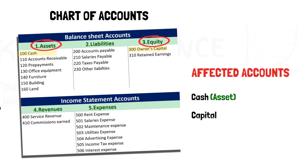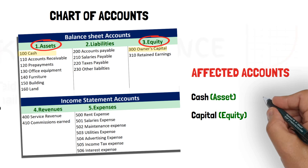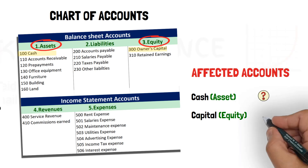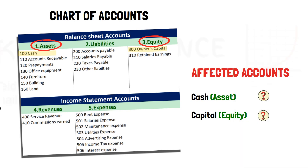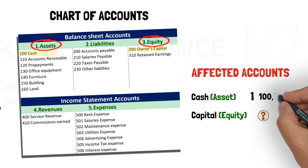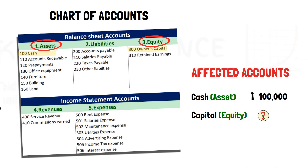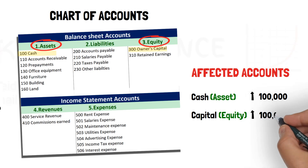Then the accountant should determine whether there is an increase or decrease in each of the identified accounts. Here, our transaction increased the cash account by 100,000, and also increased the capital account by the same figure.